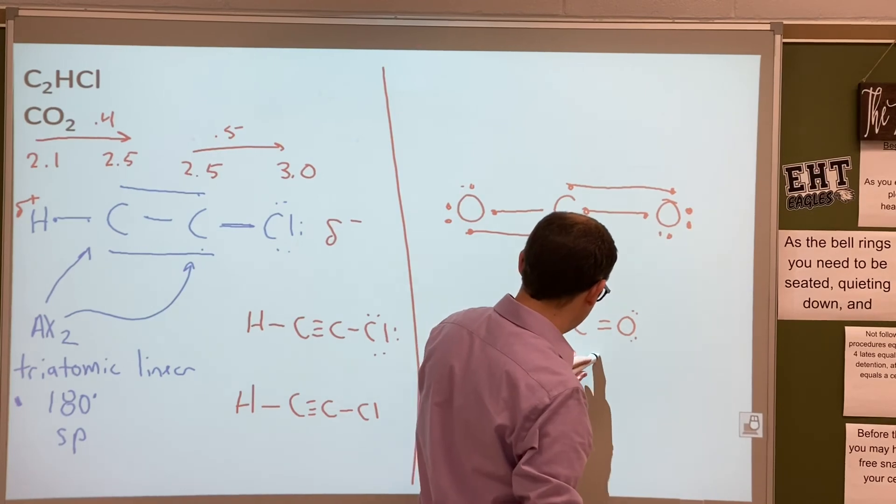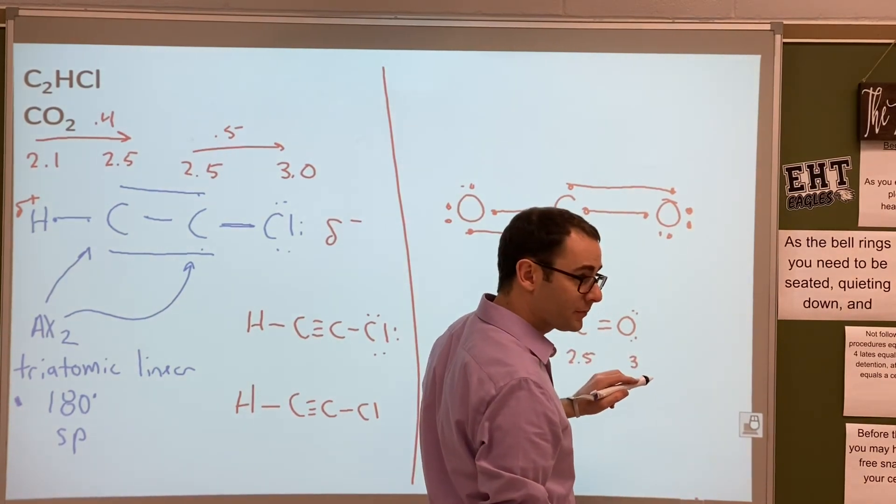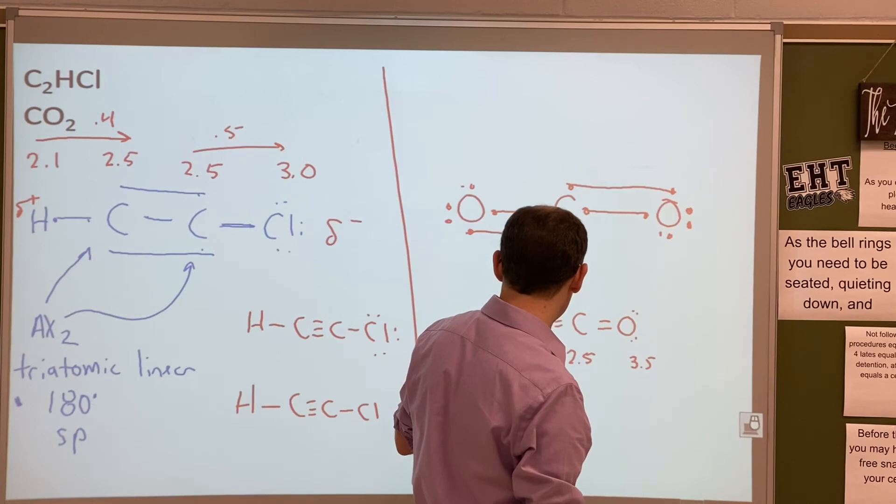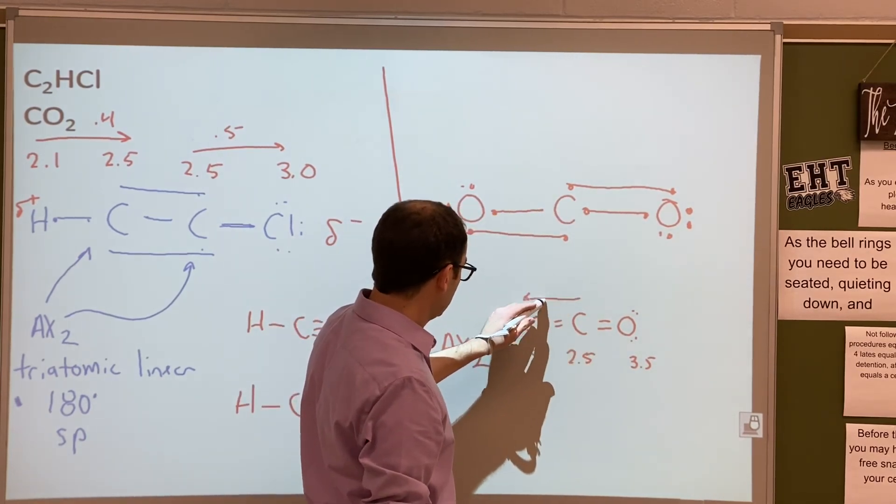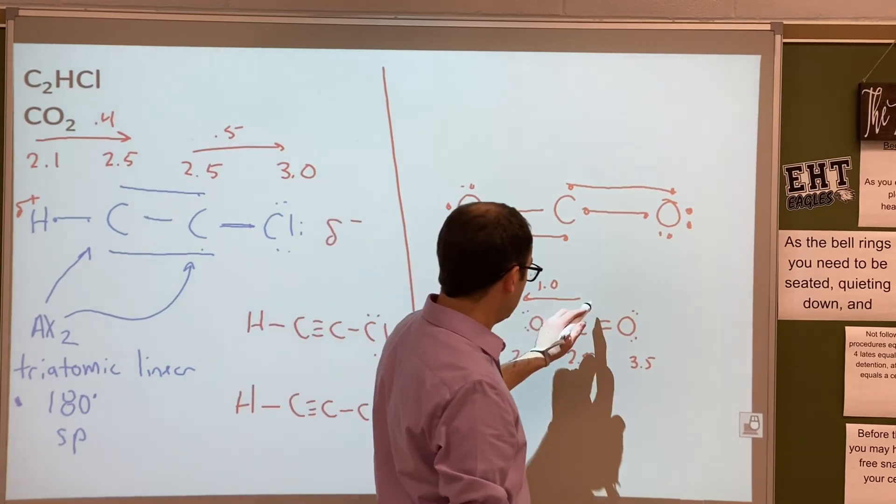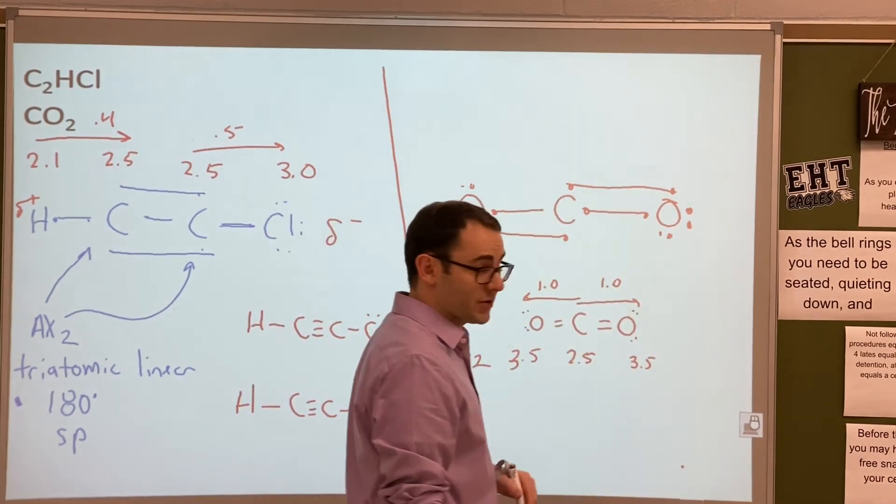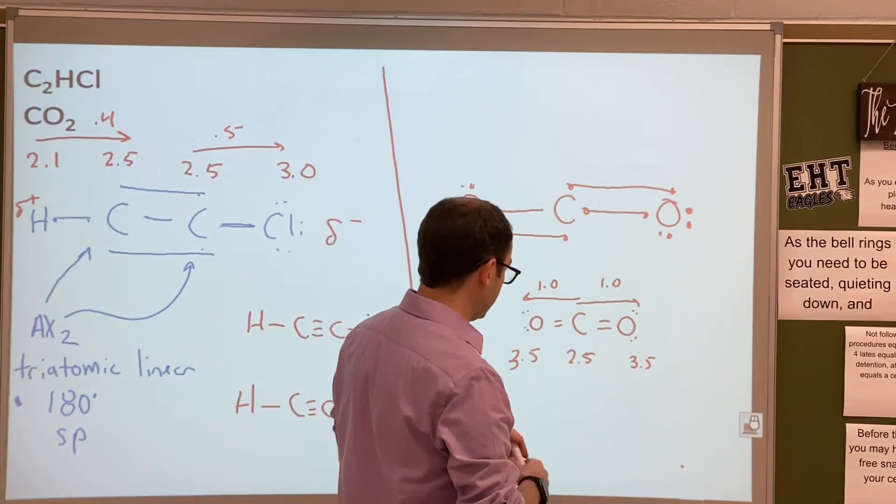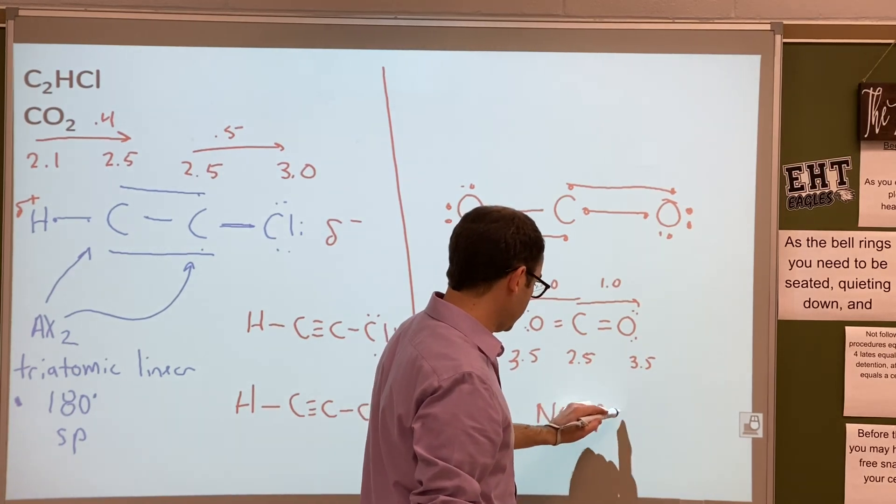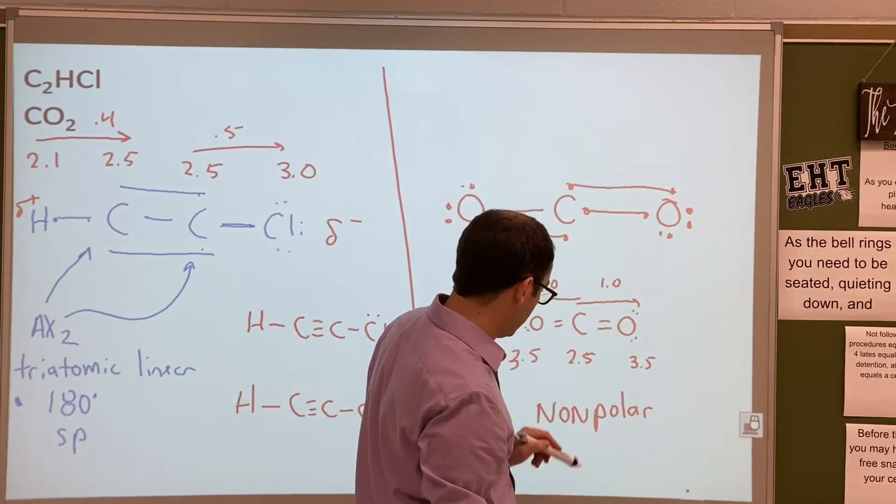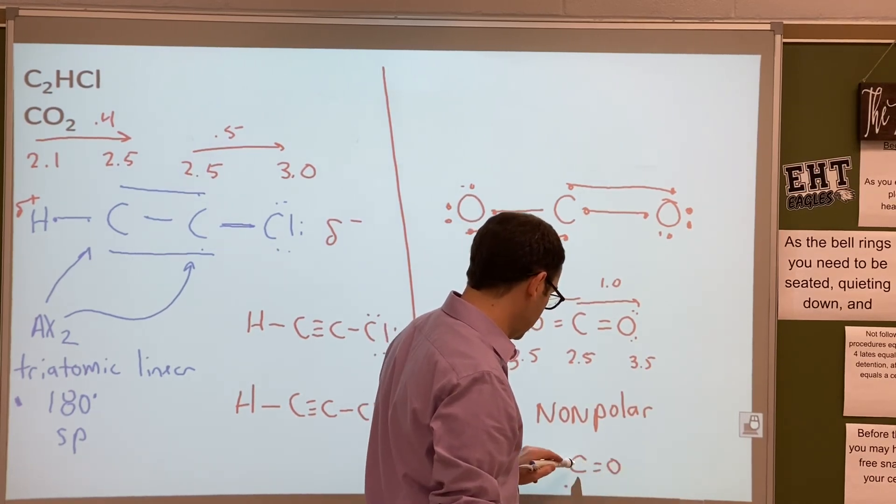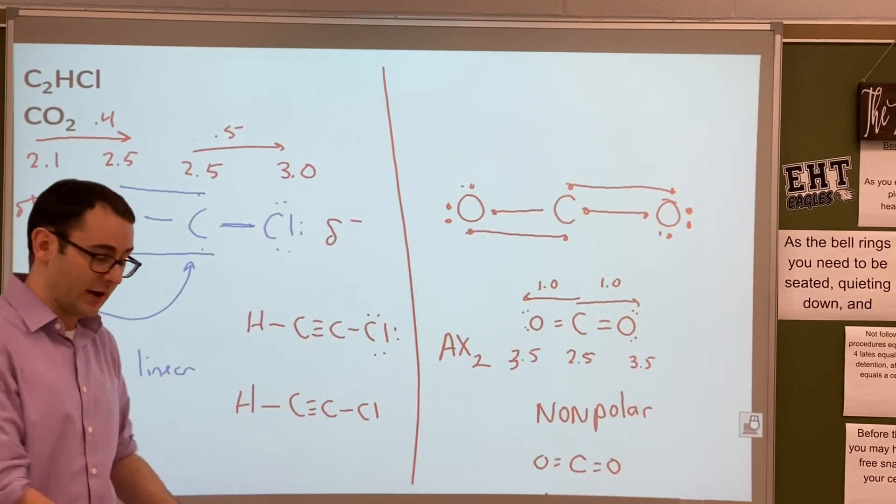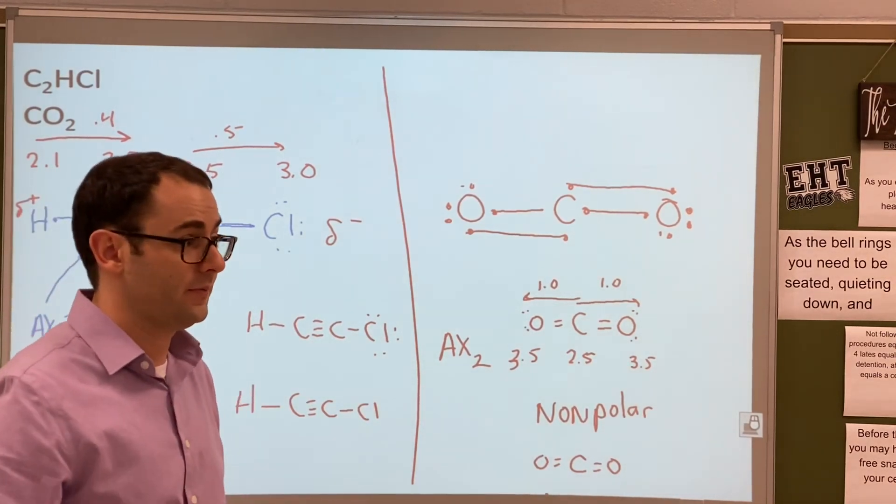Let's talk polarity. Carbon is 2.5. Oxygen is 3.5. And then 3.5. So we're going 1.0 in that direction, and then we're going 1.0 in that direction, right? So what's going to happen? They cancel out. So this is going to be non-polar. And if we want to do the structural formula for it, it would just be without the dots. Structural, Lewis, and then everything else is the same as over here. Any questions with that one?